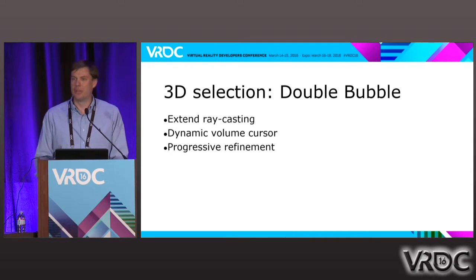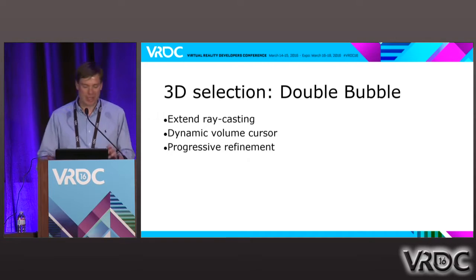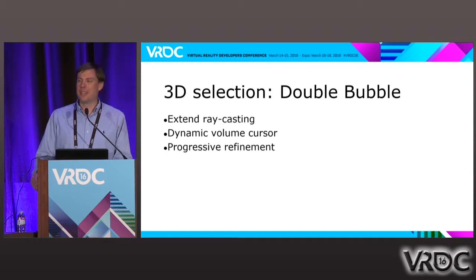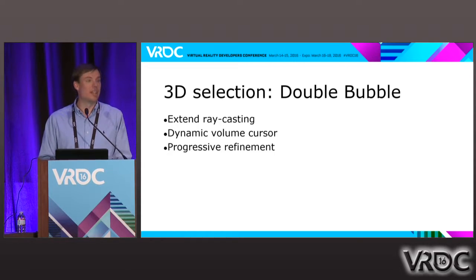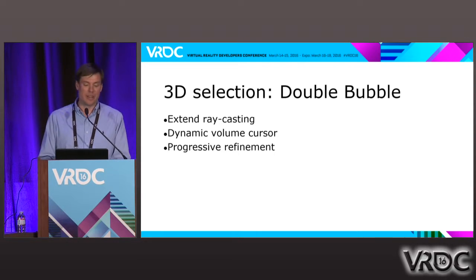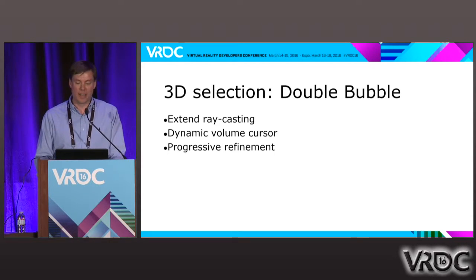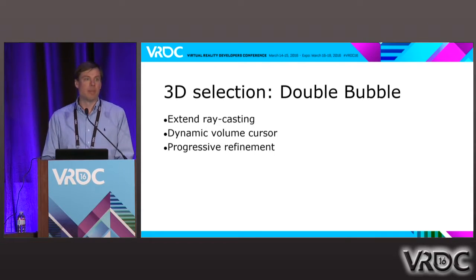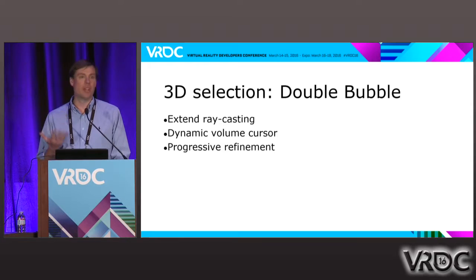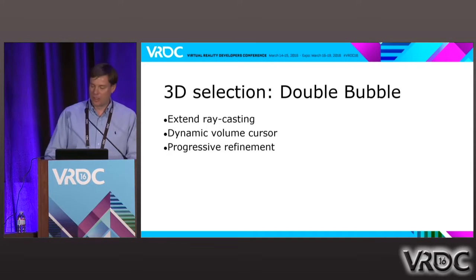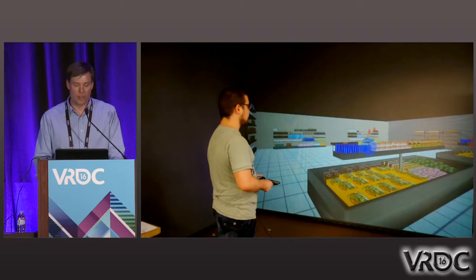Let me give an example: a technique that one of my students developed called Double Bubble. Double Bubble extends the raycasting idea in two interesting ways. First, it uses a volume cursor instead of a point cursor — you're casting a sphere or cone out into the environment. That cursor is dynamic, changing size depending on the targets in the region you're pointing at. Second, it uses progressive refinement, which means doing a bunch of easy selection tasks to get to one precise selection result. Let me show you how that works.